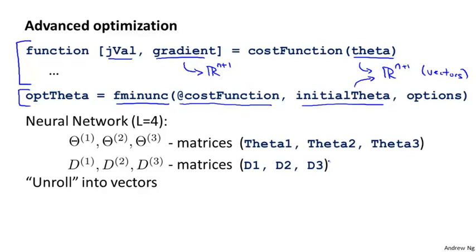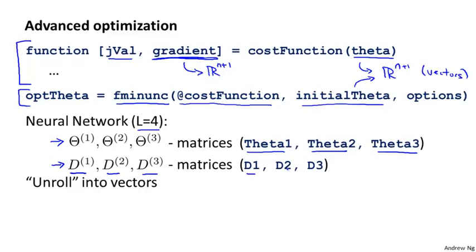This worked fine when we were using logistic regression. But now that we're using a neural network, our parameters are no longer vectors. Instead, they are matrices where for a four-layer neural network, we would have parameter matrices theta one, theta two, theta three, represented in Octave as matrices. Similarly, the gradient terms we're expected to return — we showed how to compute gradient matrices capital D one, capital D two, capital D three, represented in Octave as matrices D one, D two, D three.